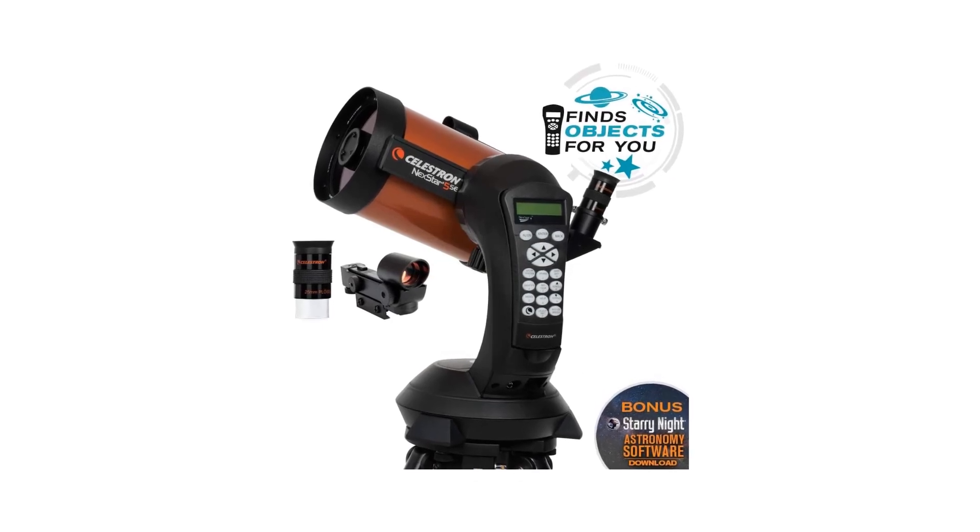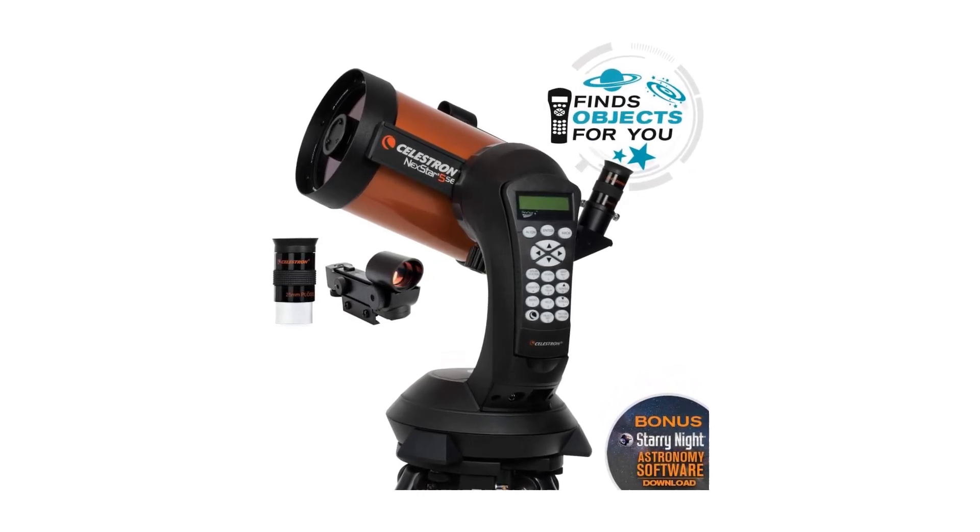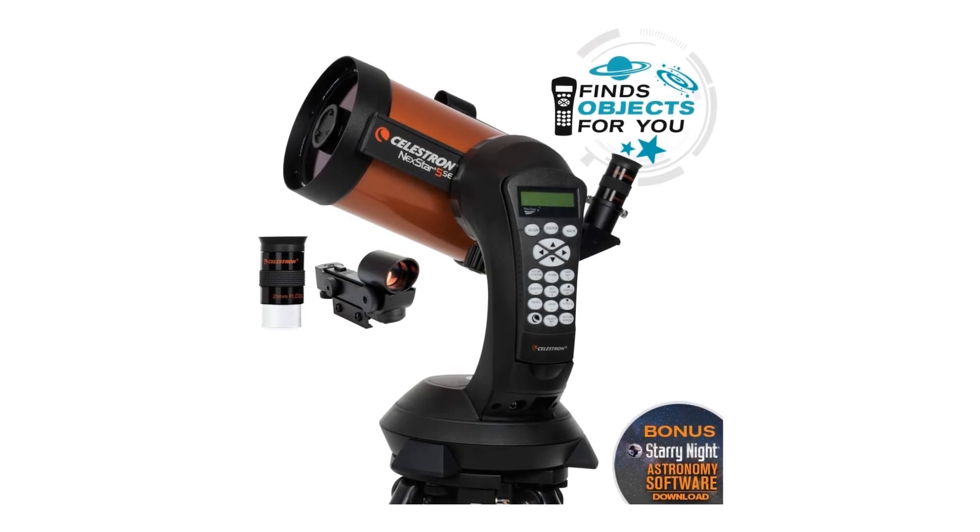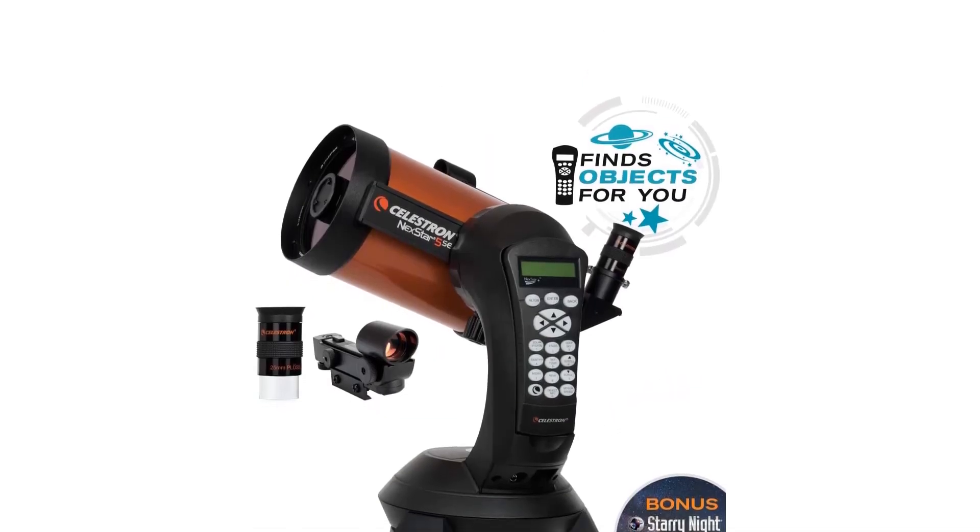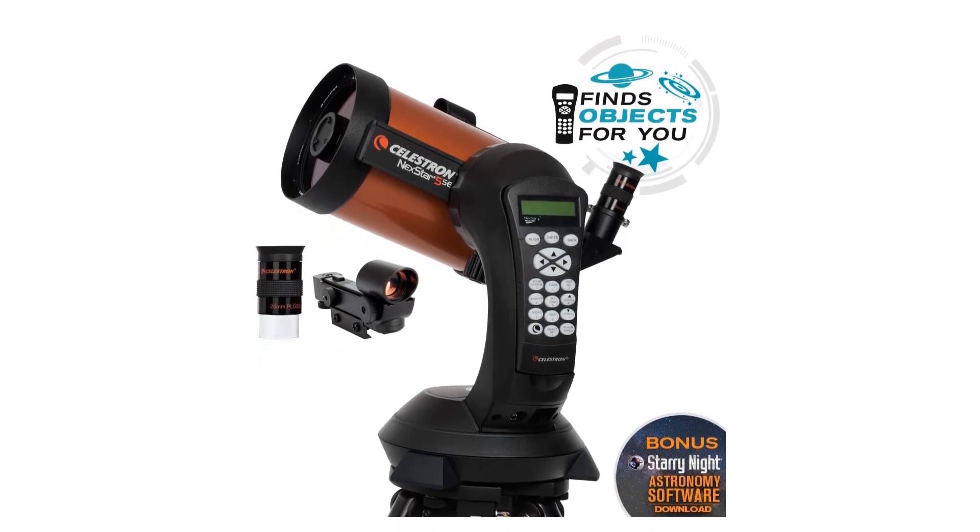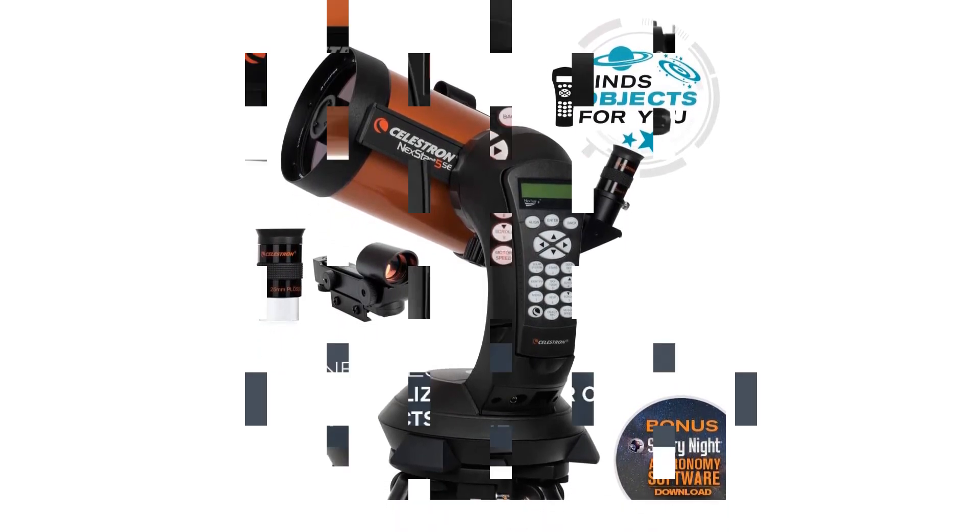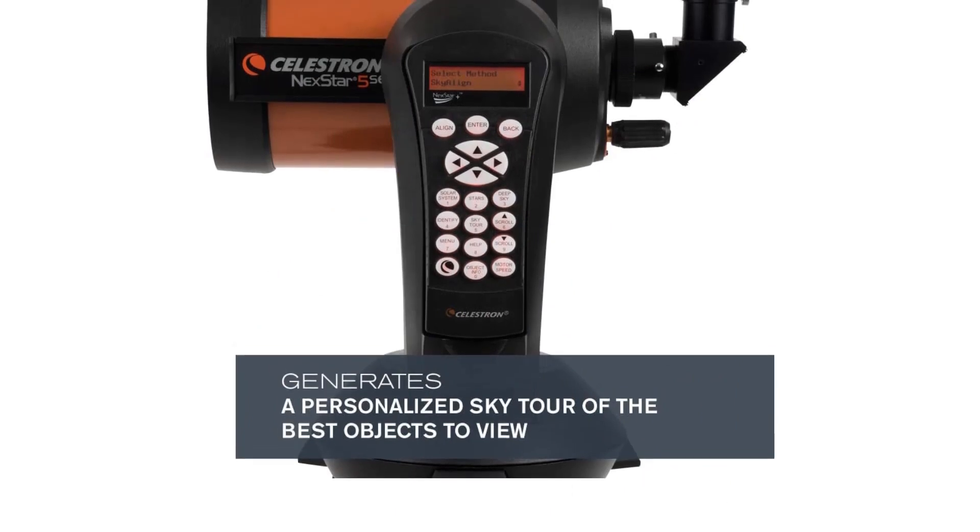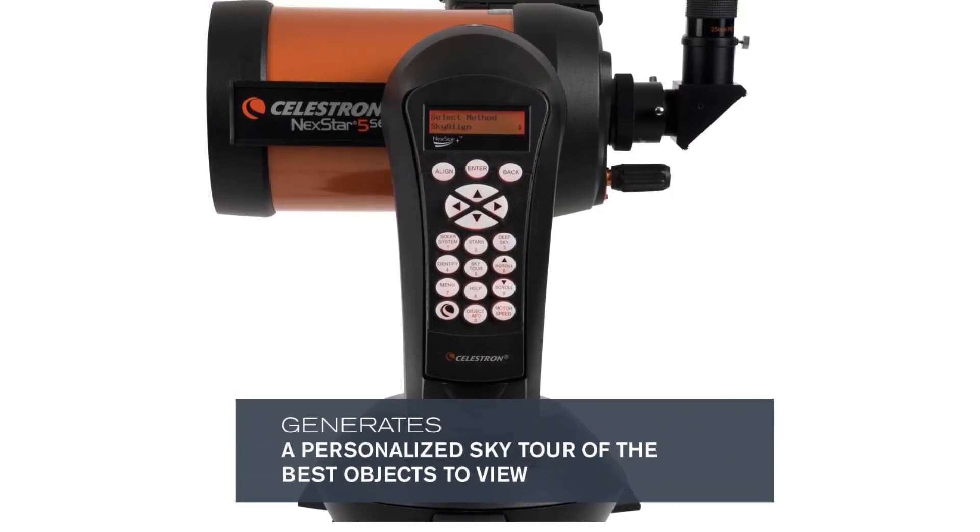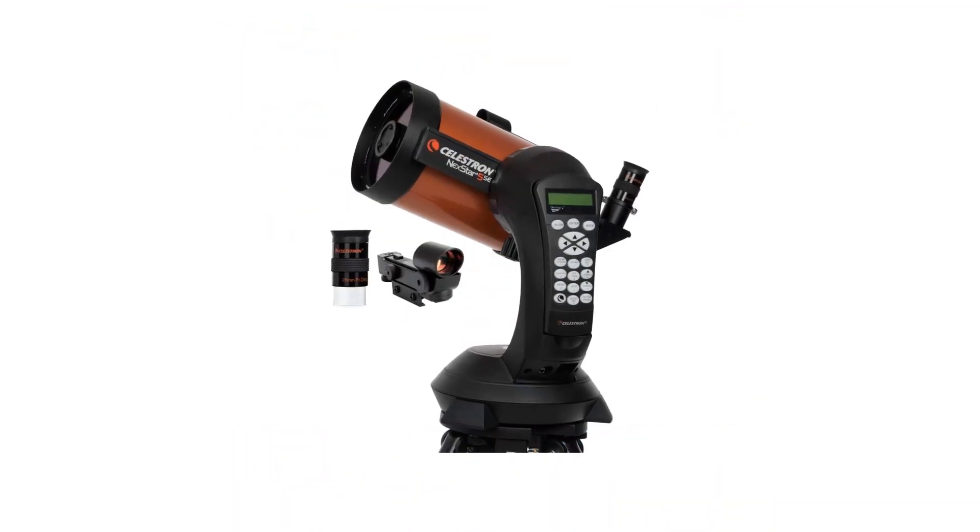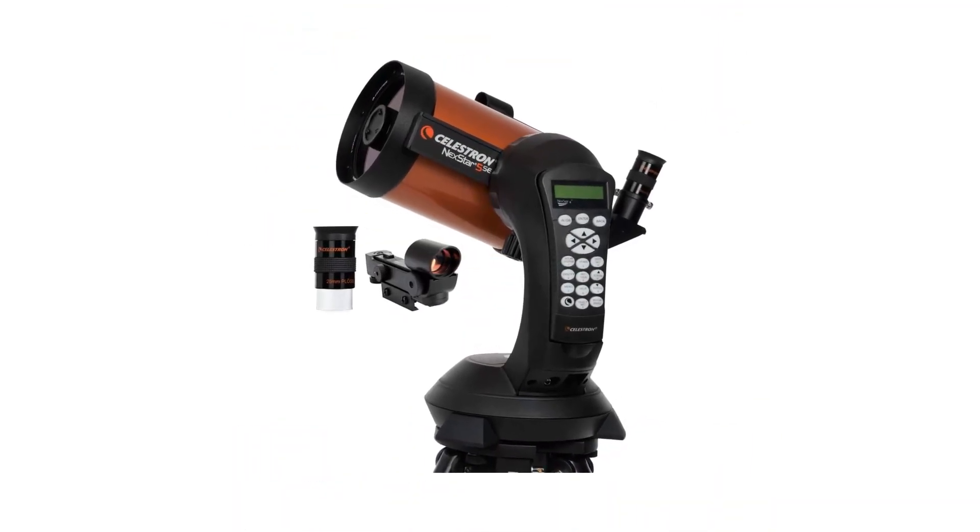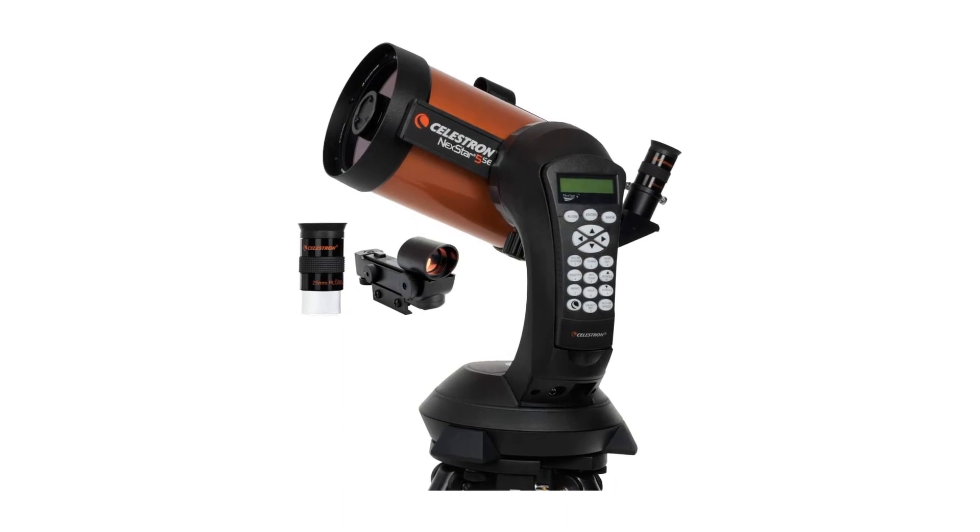With its mount's precision tracking system and integrated equatorial wedge, you'll be able to photograph and view images even as they move across the night sky. You'll also be getting a single-fork motorized go to Alt-AZ mount, a 25mm eyepiece and starpointer finder, skyline alignment technology, a Nexstar Plus computer hand controller, a 40-0-0-0-plus object database with SkyTours, and a stainless steel tripod.